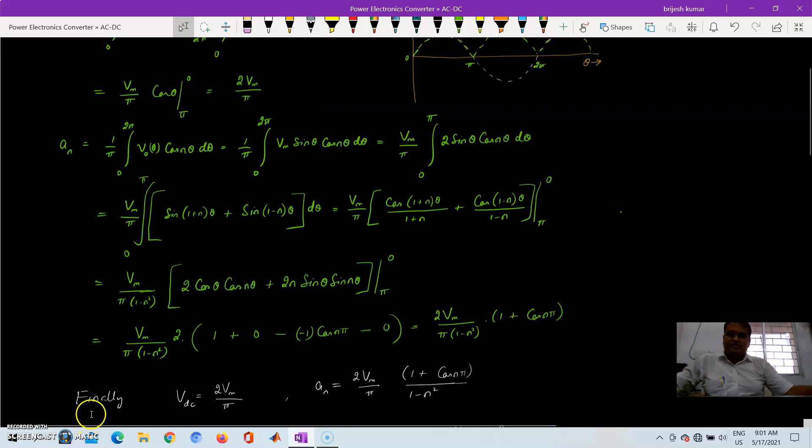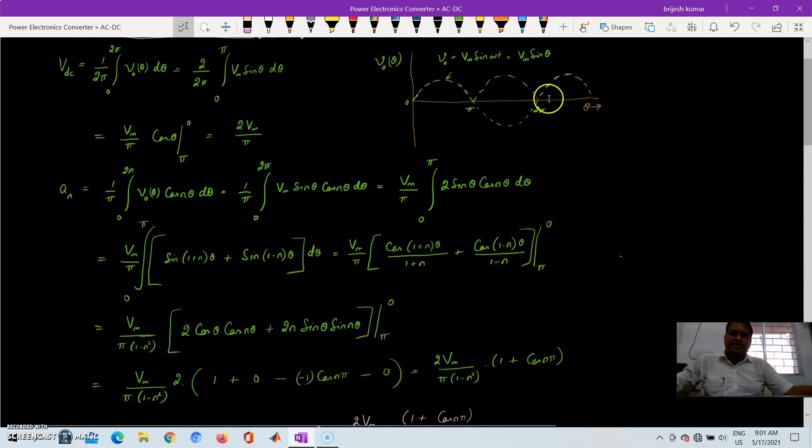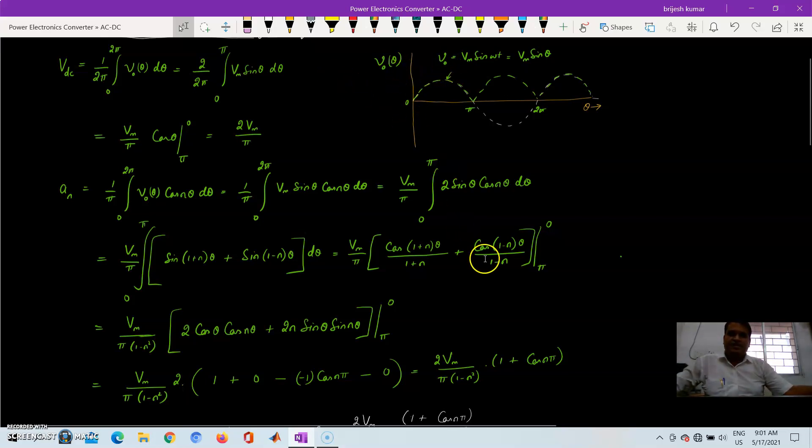So thus and what about the Bn component? The Bn component will not be there because this is an even function. Whatever the value of F of theta will be the same as the value of F of minus theta. That's why Bn component will be 0.